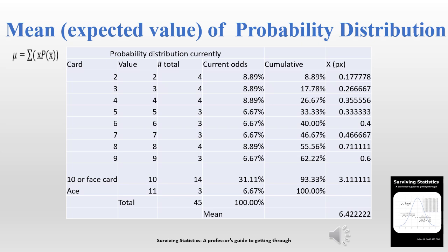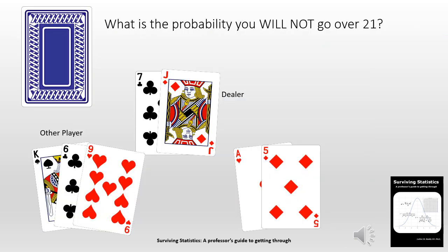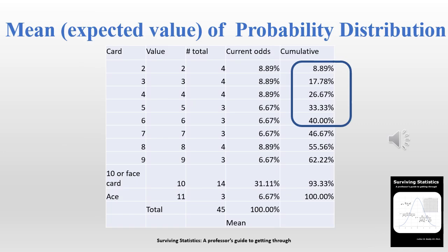I was hoping to get a 6 or less, but the mean or expected value is going to be higher than 6. The expected value is higher than the 6 or less that I need, so what's the probability that I will not go over 21? The cumulative probability of getting a 6 or less is 40%, which means I have a 60% chance of going bust with the next card.